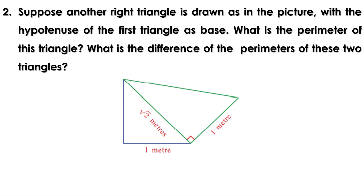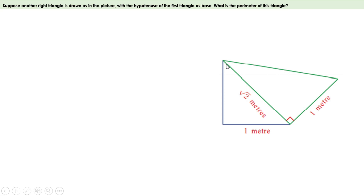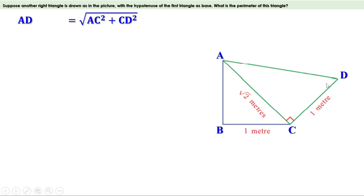This is the triangle from the first problem, and another right-angle triangle ACD is drawn with AC as its base. We know AC = √2 meters and CD = 1 meter. We need to find AD, the hypotenuse of triangle ACD. Hypotenuse = √(base² + altitude²), so AD = √(AC² + CD²). AC is √2, so AC² = (√2)², and CD is 1, so CD² = 1².